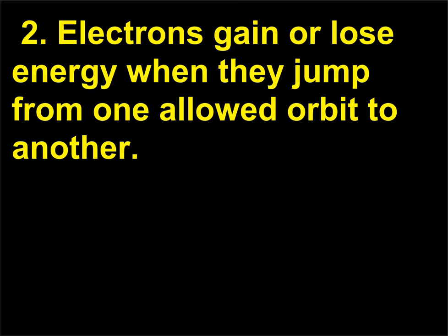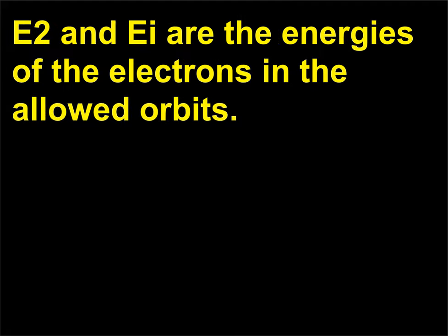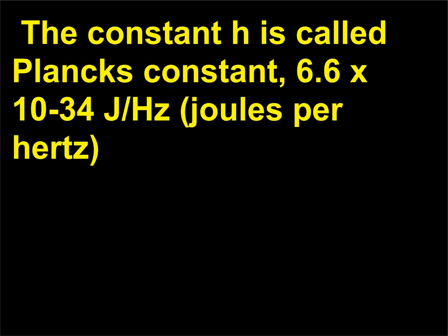Postulate 2: Electrons gain or lose energy when they jump from one allowed orbit to another. They then emit or absorb light with a frequency given by hf = E2 - E1, where E2 and E1 are the energies of the electrons in the allowed orbits. The constant h is called Planck's constant: 6.6 × 10^-34 J/Hz (joules per hertz).